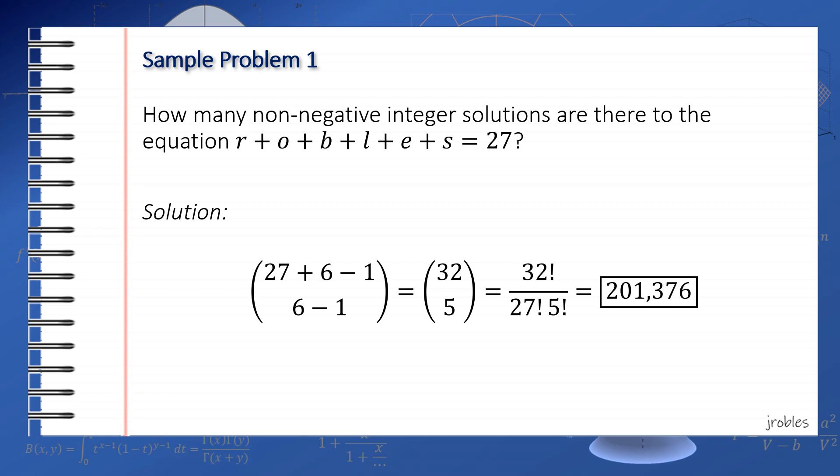We have 27 stars to be grouped into 6 groups, with the groups being r, o, b, l, e, and s. By stars and bars, there are a total of C(27+6-1, 6-1) or simply C(32,5) solutions. Can you imagine listing all those solutions?